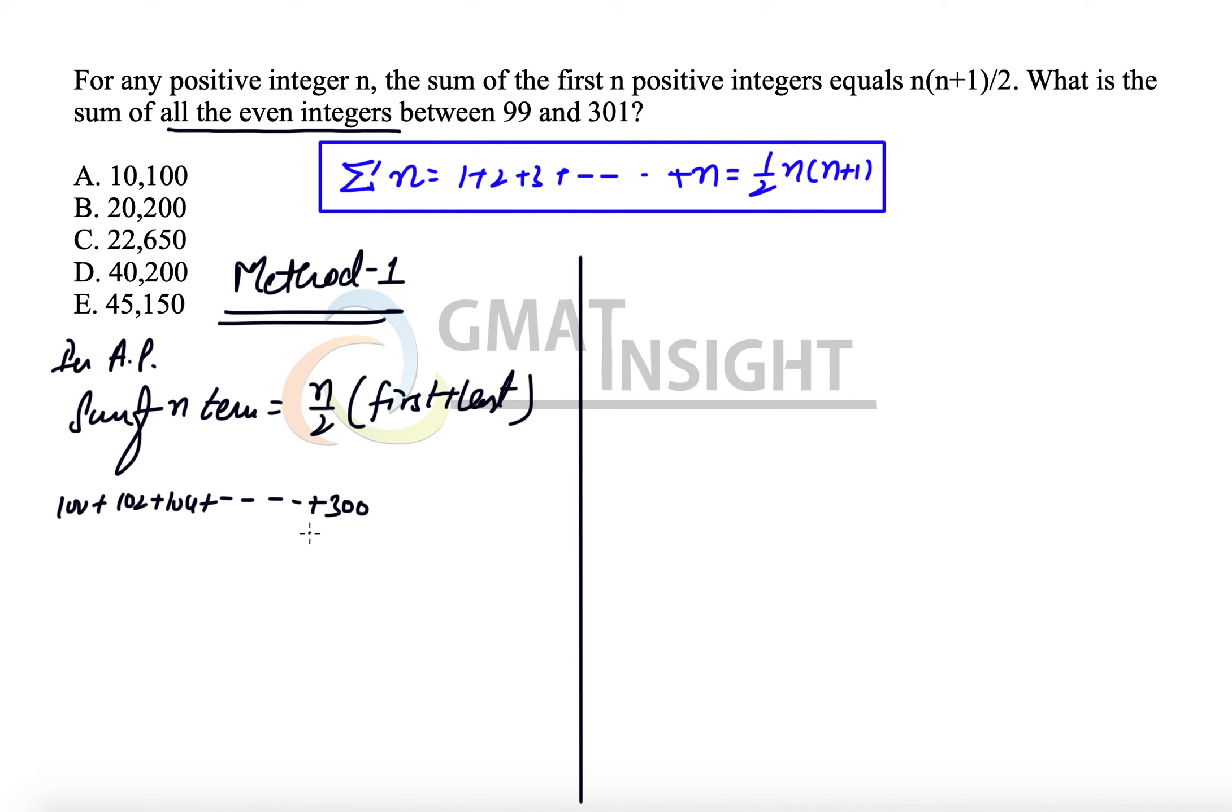There is only one question: how many terms do we have here? That means what is the value of n? From 1 to 300, the total even numbers is 300/2, which is 150. We have to avoid counting all the even numbers from 1 to 98 because after 98, the next even number is 100 which we need to count.